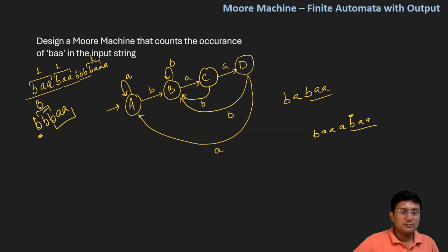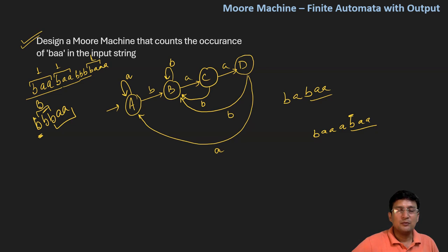This is the DFA that we have prepared, and now I will convert it to the Moore machine which counts the occurrence of BAA. Whenever BAA comes, I apply output 1 at state D, because reaching state D means I have obtained the BAA. For the rest of the states, I mark them as 0, meaning if no BAA is completed the output zero should be generated.